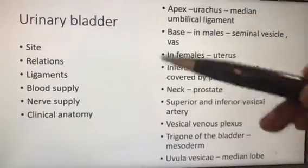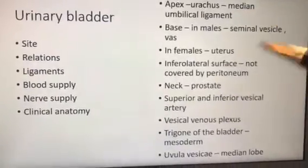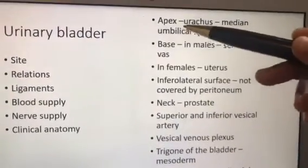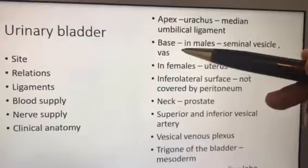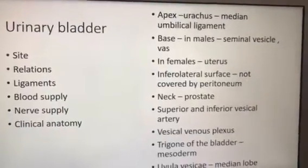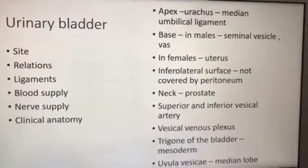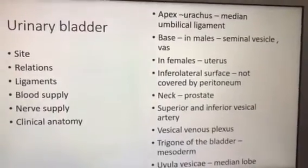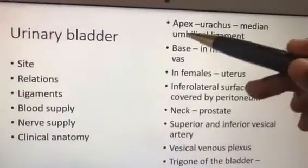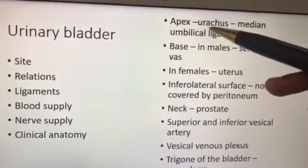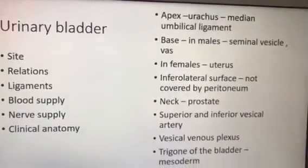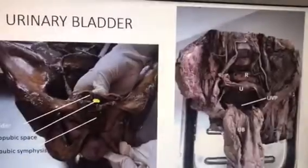What are the surfaces? You have to write about apex, base, superior surface, inferolateral surfaces, and neck. These are the points we are supposed to write. And the apex — very importantly — you have to write about the urachus and the median umbilical ligament.